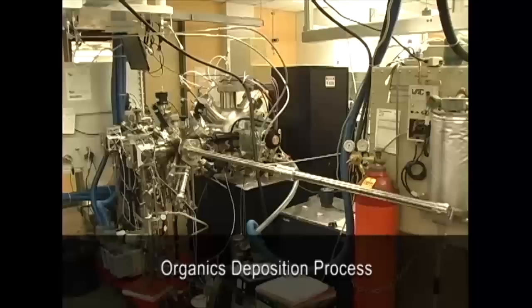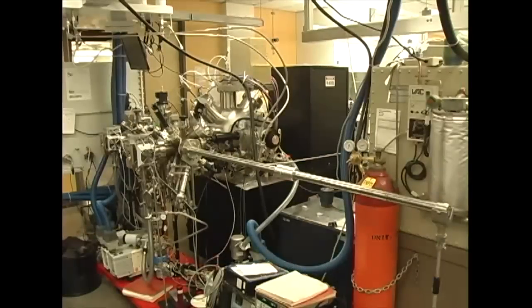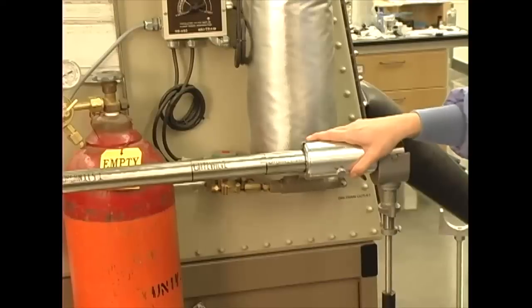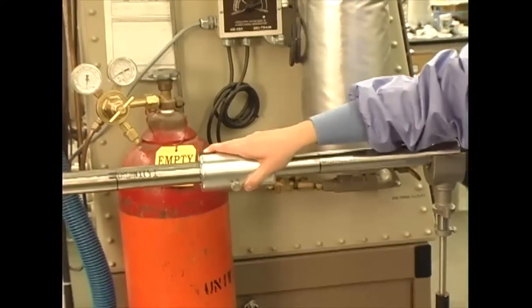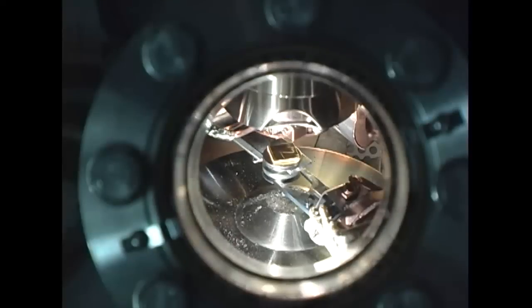After a vacuum of 5 times 10 to the minus 7 torr is achieved and the organic source has reached the desired temperature, we start the deposition process. We move the arm with the boat into the organics chamber and rotate downwards facing the organic crucibles.